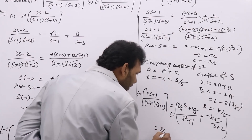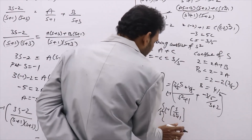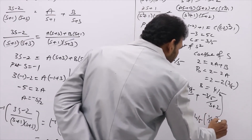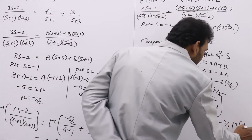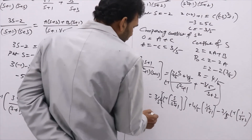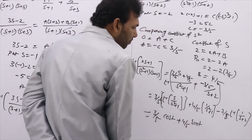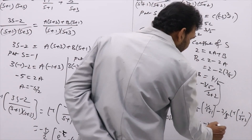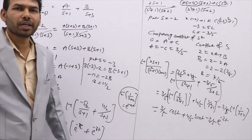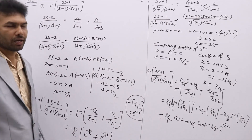Splitting into individual fractions and taking the inverse Laplace: (3/5)L⁻¹{s/(s²+1)} + (4/5)L⁻¹{1/(s²+1)} − (3/5)L⁻¹{1/(s+2)} = (3/5)cos(t) + (4/5)sin(t) − (3/5)e^(−2t). This is the answer for L⁻¹{(2s+1)/[(s²+1)(s+2)]}. If you have any doubts you may ask — inverse Laplace transform is one important topic.